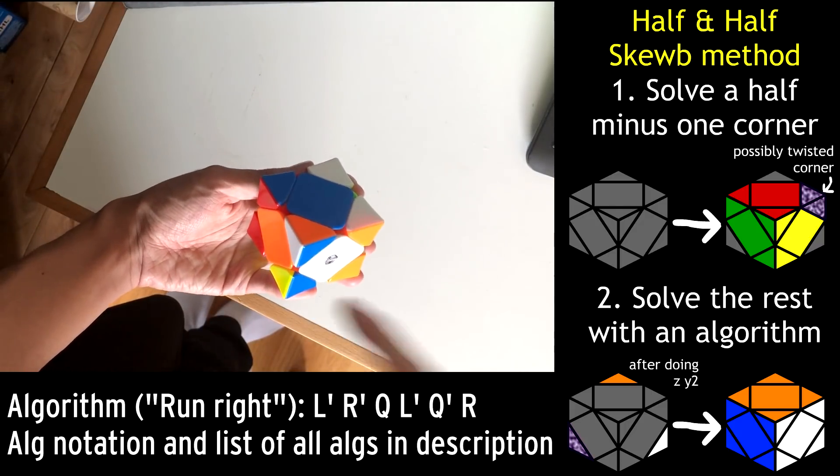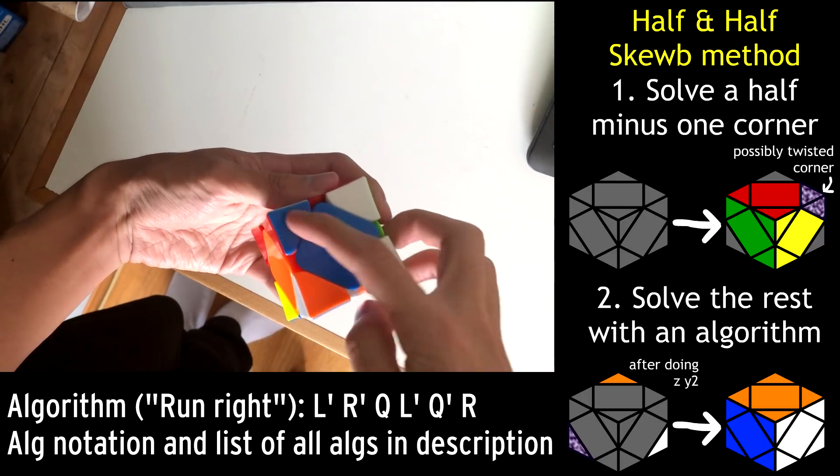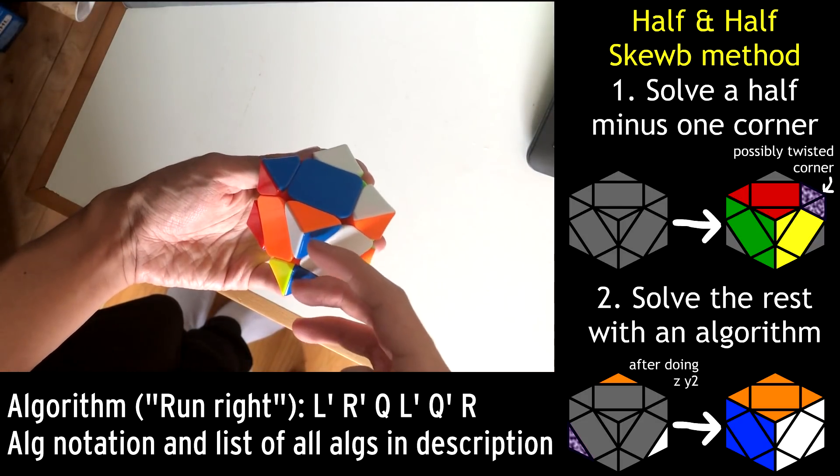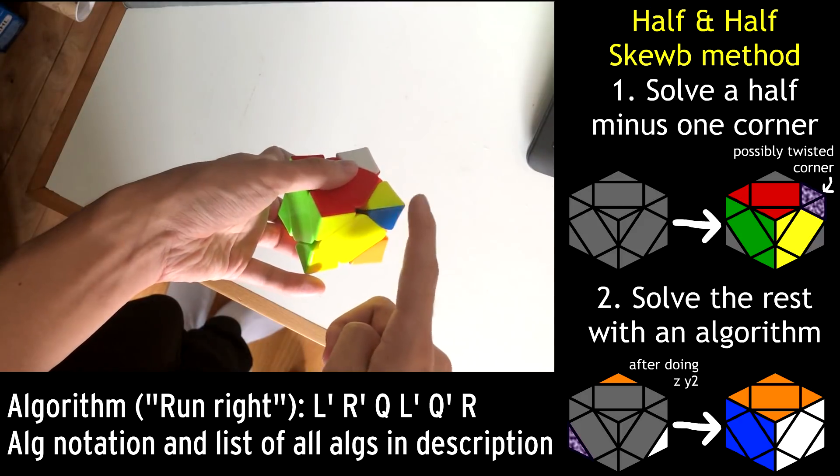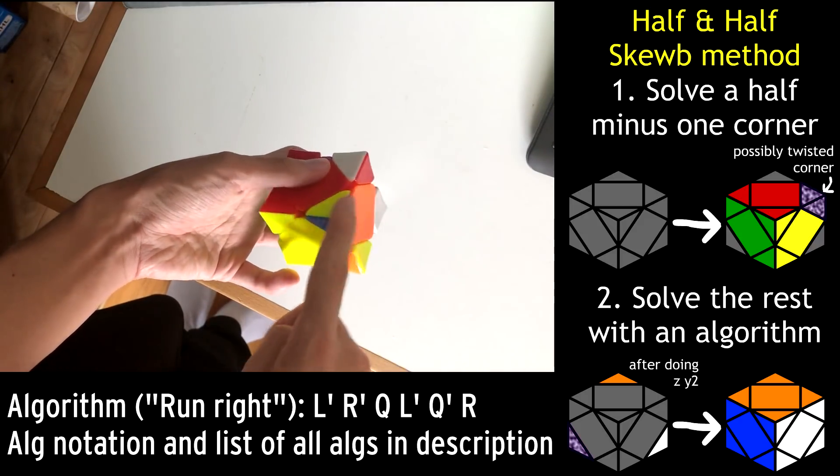So finishing step one will get you here, and finishing step two looks at this half of the SCUBE plus the corner and solves all of it with one algorithm. By the way, the algorithm that solves this case, where we have a center attached to a corner on the top, and headlights here that are the same color as these two, and then the corner on our first half is not twisted correctly,